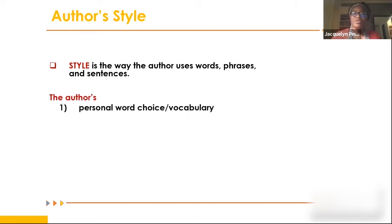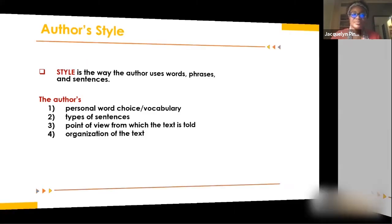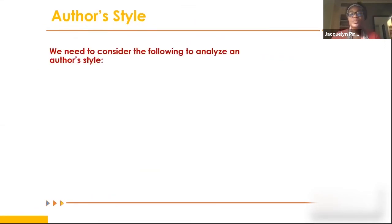The author's word choice, vocabulary, types of sentences, and point of view from which the text is told - that is style. The organization of the text is part of style as well. To analyze an author's style, we need to consider several things.